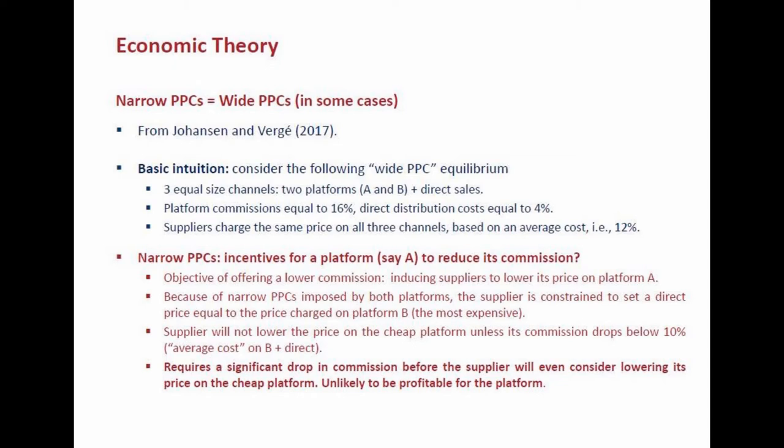So that average cost of 10% applies when selling through platform B and direct at a common price. A supplier will set a lower price on the cheap platform only if the commission has dropped sufficiently — specifically below 10%. Under narrow price parity, to convince suppliers to offer a better deal on your platform, you must lower your commission from 16% to below 10%, and you'd need to drop it even further before it attracts significantly higher sales. That's likely unprofitable for the platform, which makes the two equilibria essentially identical.